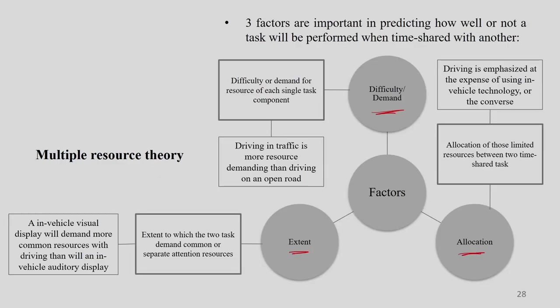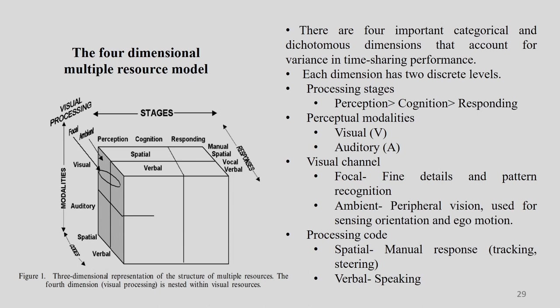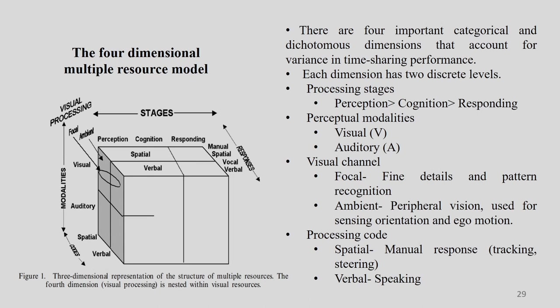These three factors are considered in multiple resource theory and will be used in the multiple resource time sharing model. Now let us understand what we call the four-dimensional model. There are four important categorical and dichotomous dimensions that account for variance in time-shared performance: processing stages, perceptual modalities, visual channel, and processing code.